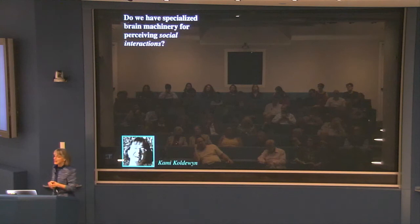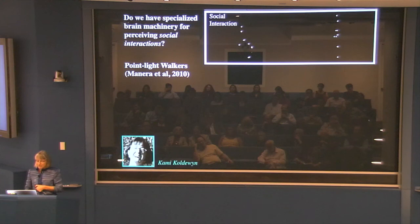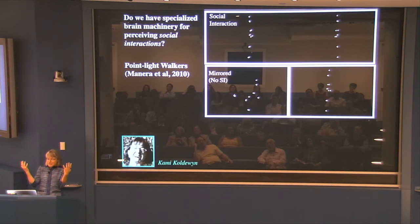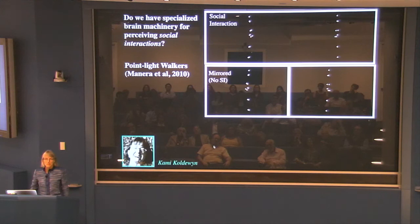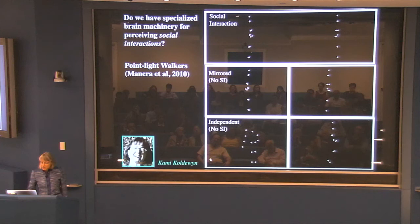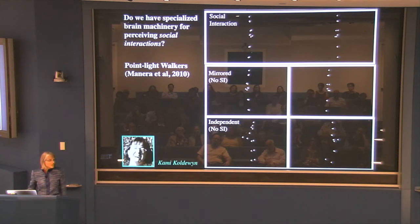We care a lot about detecting social interactions and we're really good at it. She started using point light walkers — here's an example of a rudimentary social interaction, where one person signals 'stand' and the other person stands. In contrast, we made a control video with the figures flipped and facing away with a line down the middle, making them perceptually similar but less clearly communicative. Because I felt we weren't completely destroying the percept of interaction there, we used a more extreme maneuver: cases of people involved in clearly independent activities, where nobody would perceive a social interaction between the two.